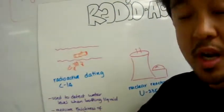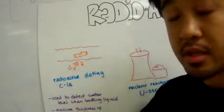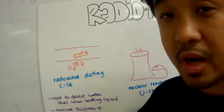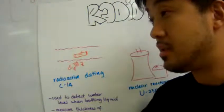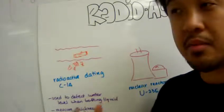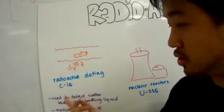radioactive unstable isotopes can be used in a process called radioactive dating. Carbon, for example, comes in three forms: carbon-12, 13, and 14.